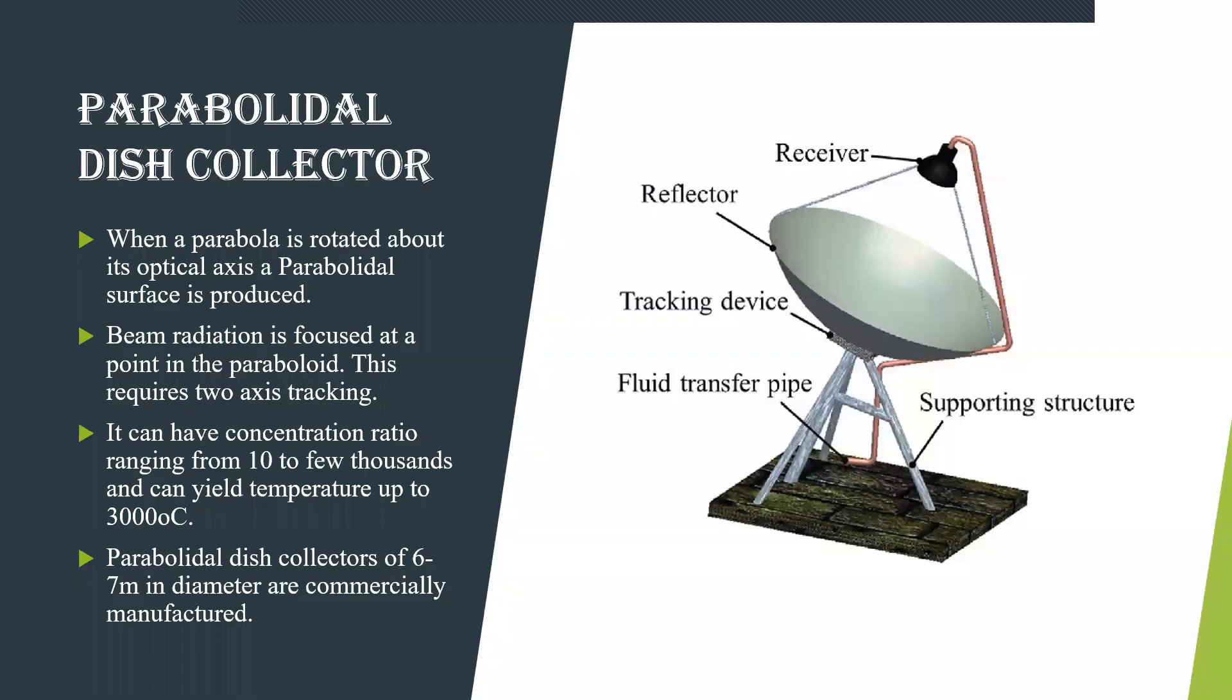Next, non-focusing type is paraboloidal dish collector. Here you can have a reflector which is you have a tracking device connected across the reflector. You have a fluid transfer pipe. This is the complete supporting structure for this paraboloidal dish collector and you have a receiver at the top. When a parabola is rotated about its optimal axis like it is a paraboloidal surface, then there is a paraboloidal surface that is formed when it is rotated across. Here it is focusing only beam radiation.